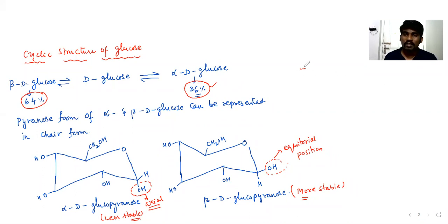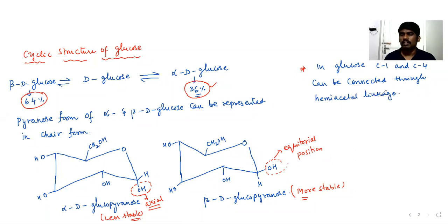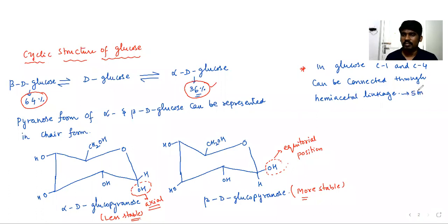The stability is explained by the position in the chair form: the OH group in beta-D-glucopyranose at the equatorial position suffers less repulsion, while in alpha-D-glucopyranose the OH at C1 is axial. In glucose, C1 and C4 can also be connected through a hemiacetal linkage, which gives a 5-membered ring — represented similarly to furan.